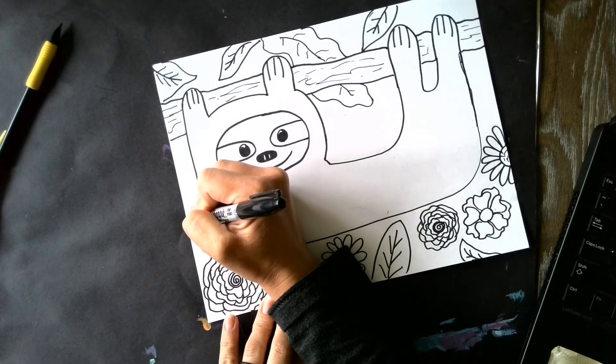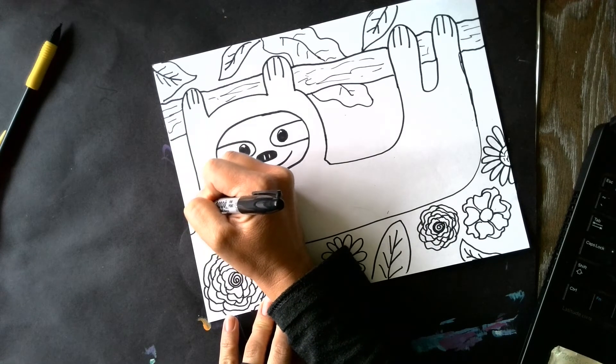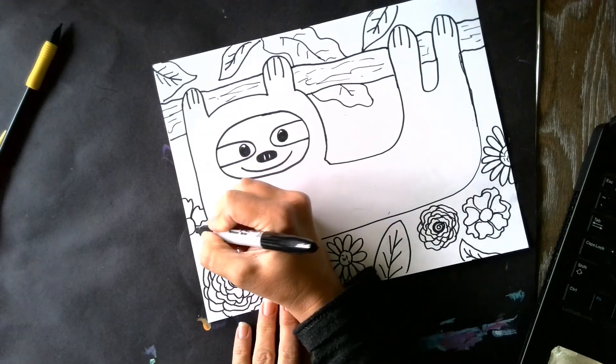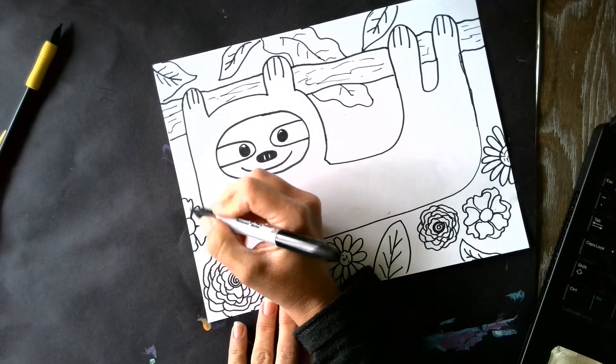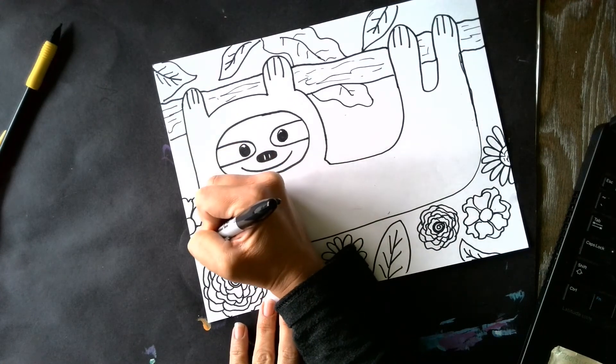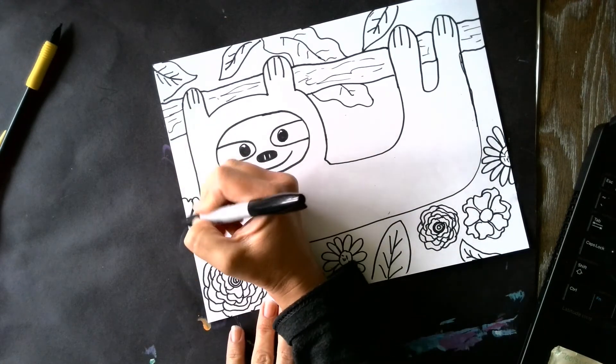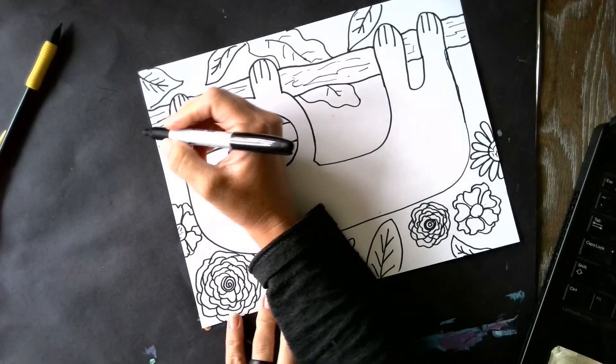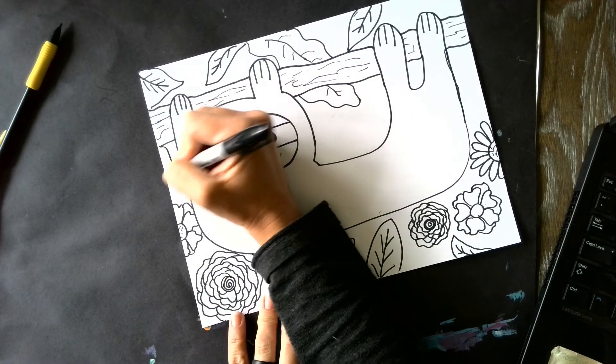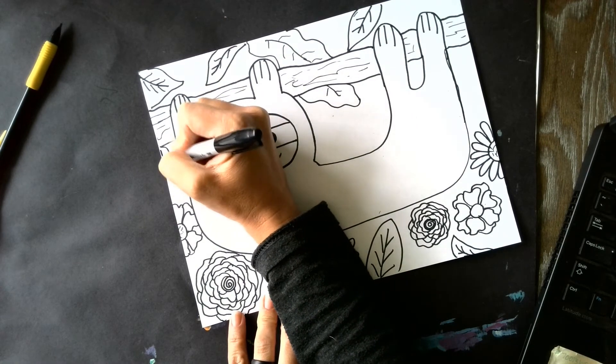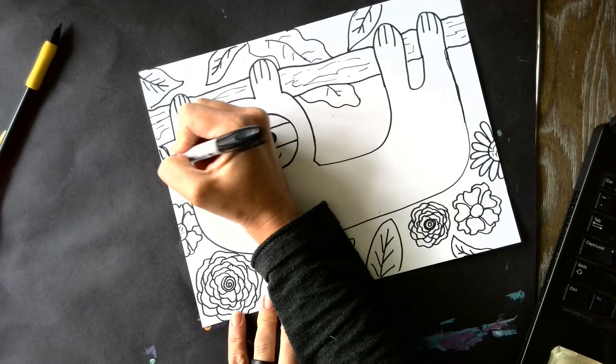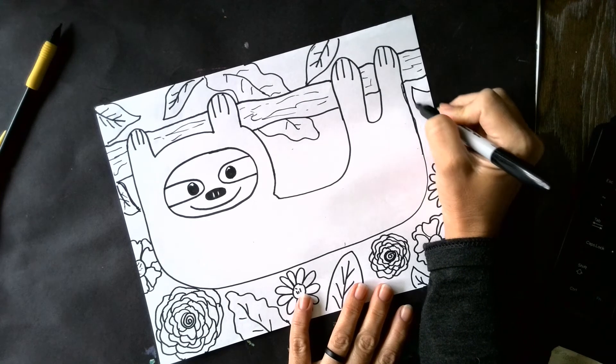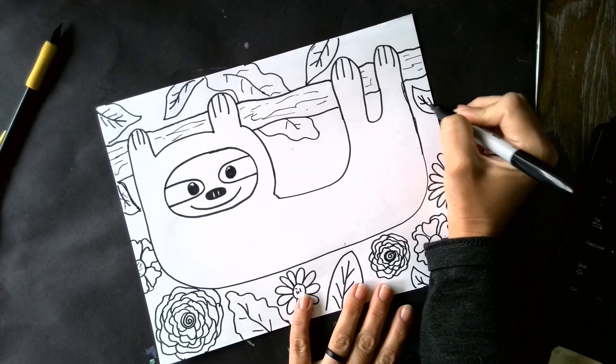So I'm going to do some half flowers over here. Again, notice how I'm stopping when I get to my sloth because I don't want to accidentally color on top of it. And this flower is actually behind him. So I'm going to make sure that I show that. I might do one more leaf right here. There we go.